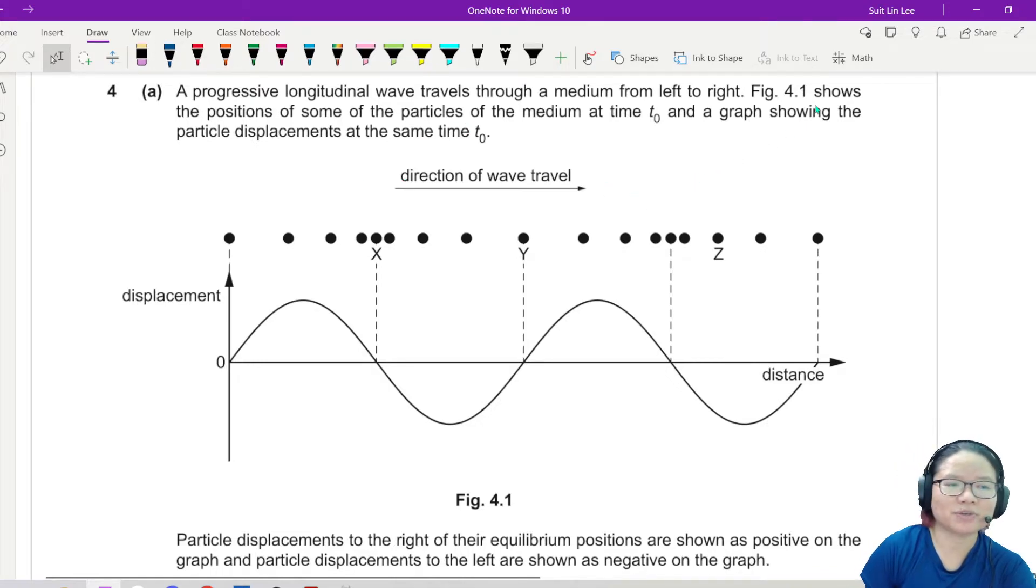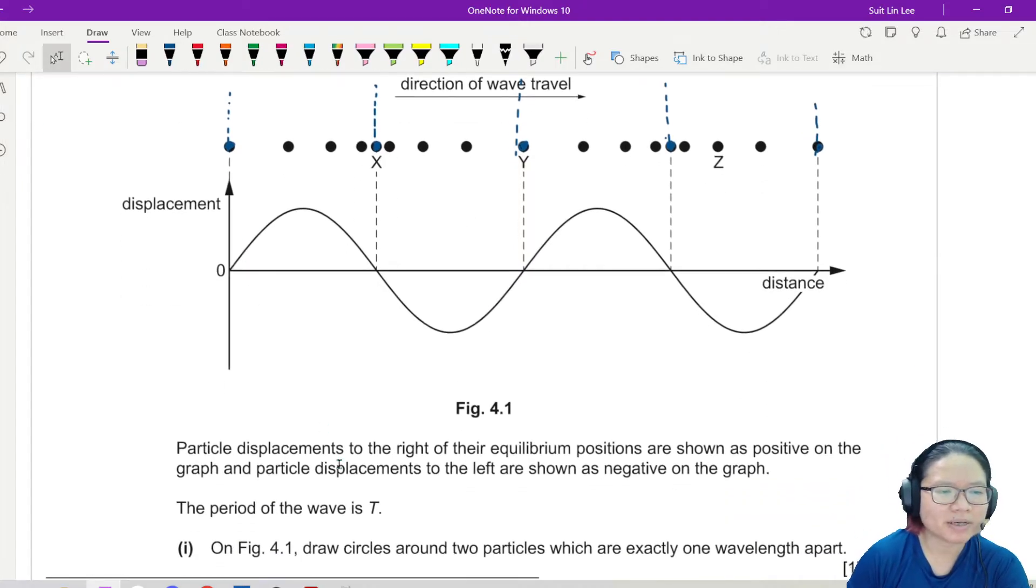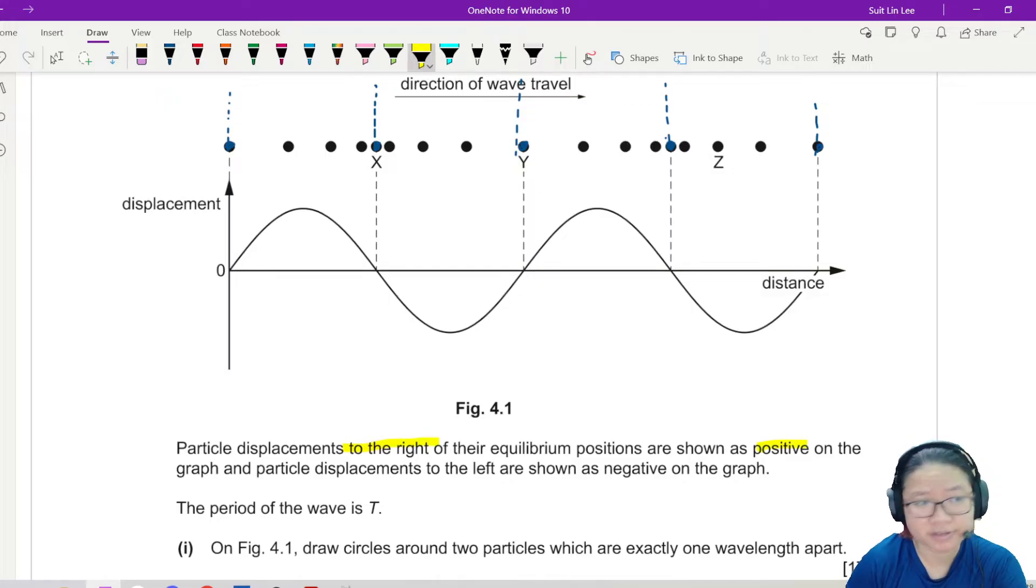So a way to think about it is this is zero displacement. This particle here, this position is zero displacement. And this is another point of zero displacement. This is another point of zero displacement. This is another point of zero displacement. And also here. They mark out for you already. Particle displacement to the right of the equilibrium position are shown as positive. So to the right is positive, which means everything here is to the right, and everything down here is to the left.